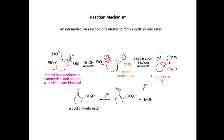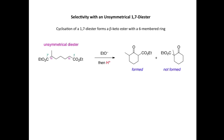Here we considered a symmetrical diester. Now let's look at selectivity when we use an unsymmetrical 1,7-diester — in this case, cyclization to form a beta-ketoester with a six-membered ring. Here we have a 1,7-diester, and you'll notice it's unsymmetrical. At the sixth position of the chain, we've introduced a methyl substituent. So we still have two alpha positions — carbon atoms 2 and 6 — but clearly they are different.